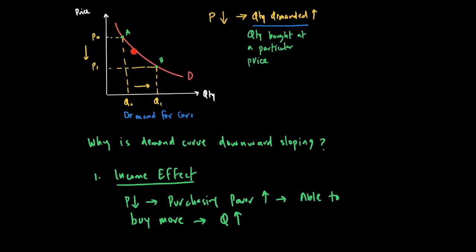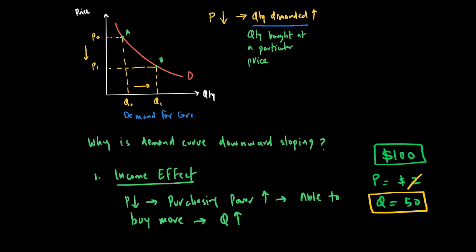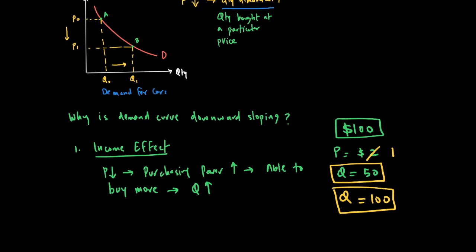When you go from P0 to P1, because goods are becoming cheaper, you are able to buy more. For example, if you have $100 and the price of a good is $2, the quantity you can buy is 50 units (100 ÷ 2). Now if the price drops from $2 to $1, your same $100 can now buy 100 units (100 ÷ 1). Your purchasing power goes up, you can buy more, and the demand curve is downward sloping because price goes down and quantity demanded goes up.